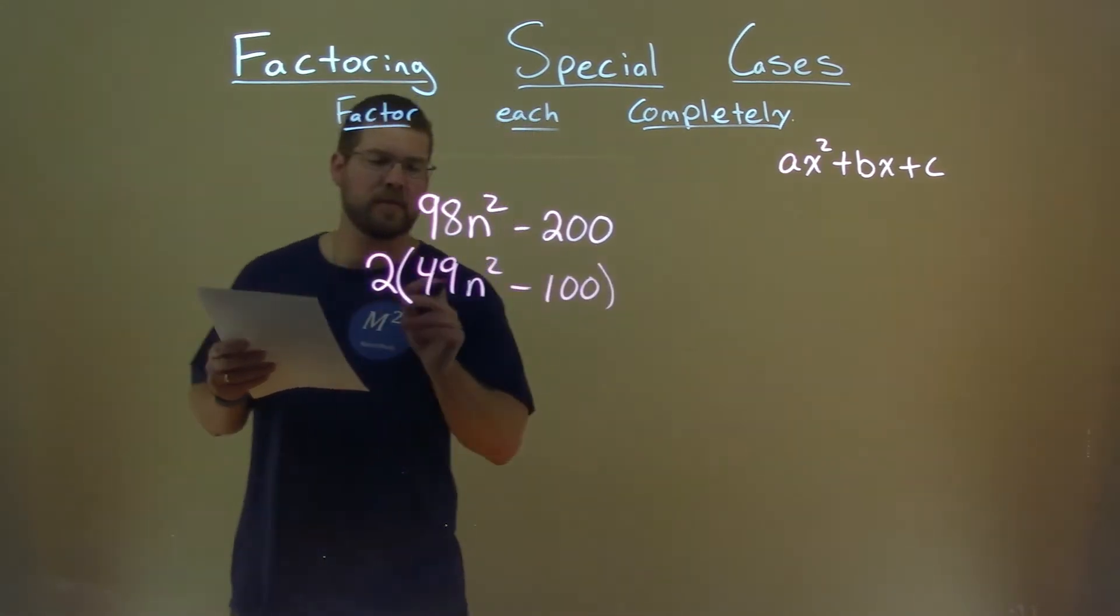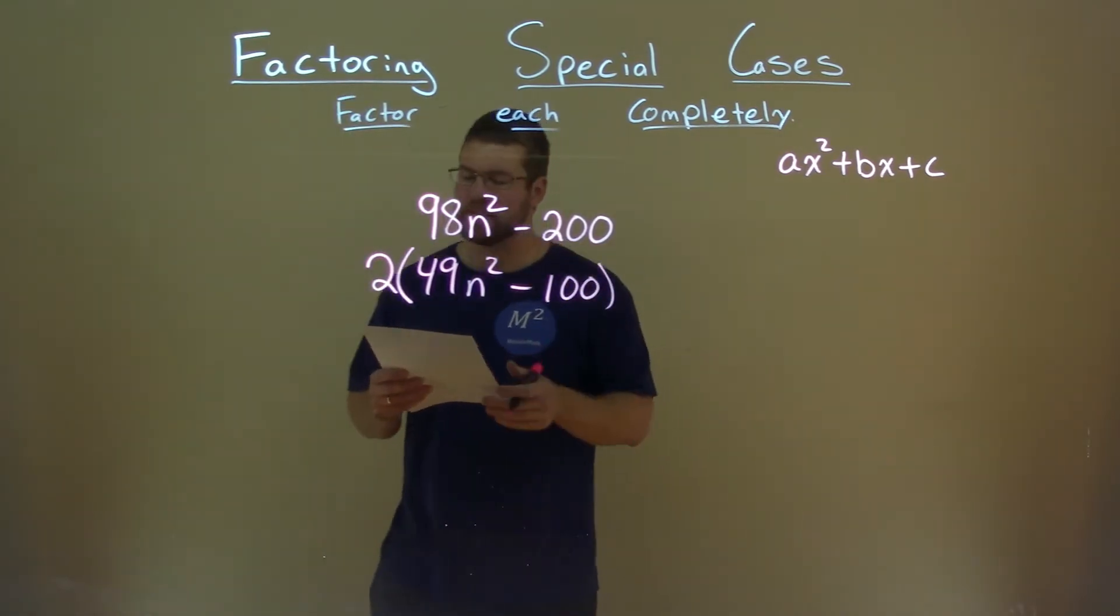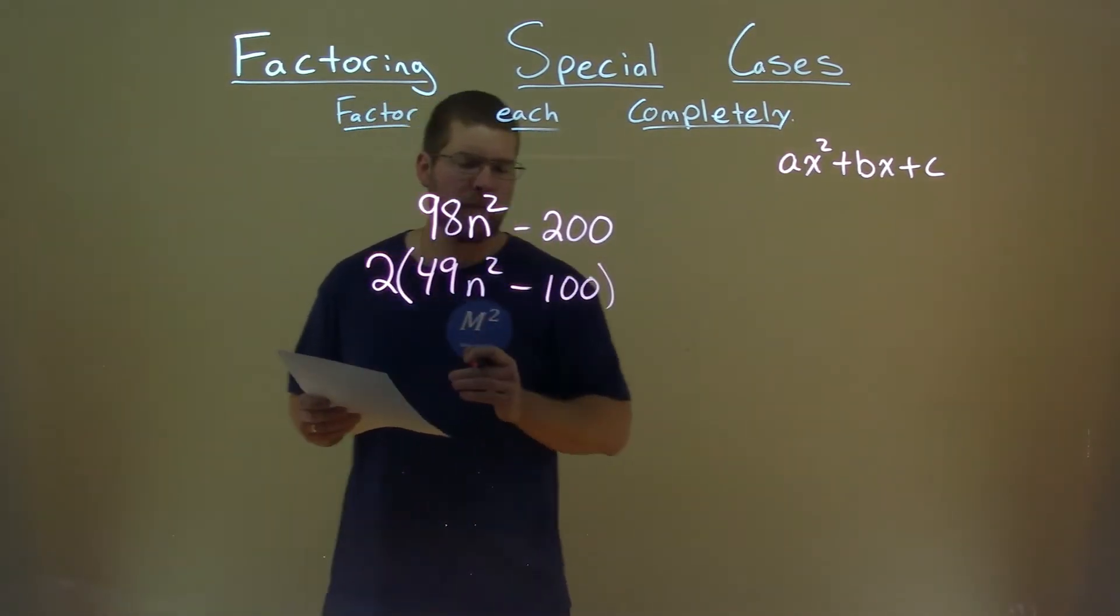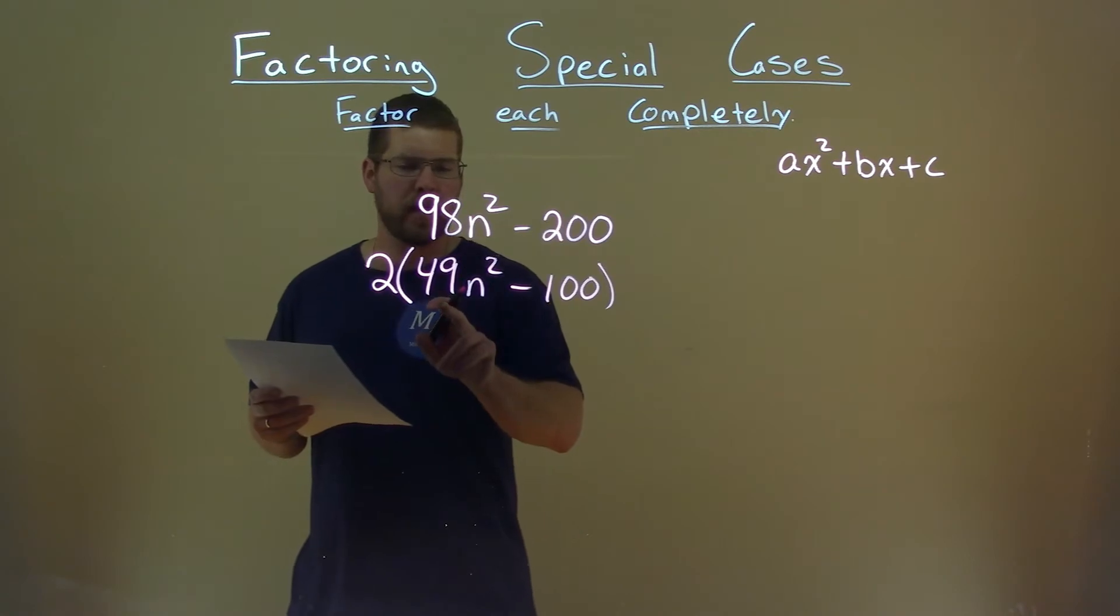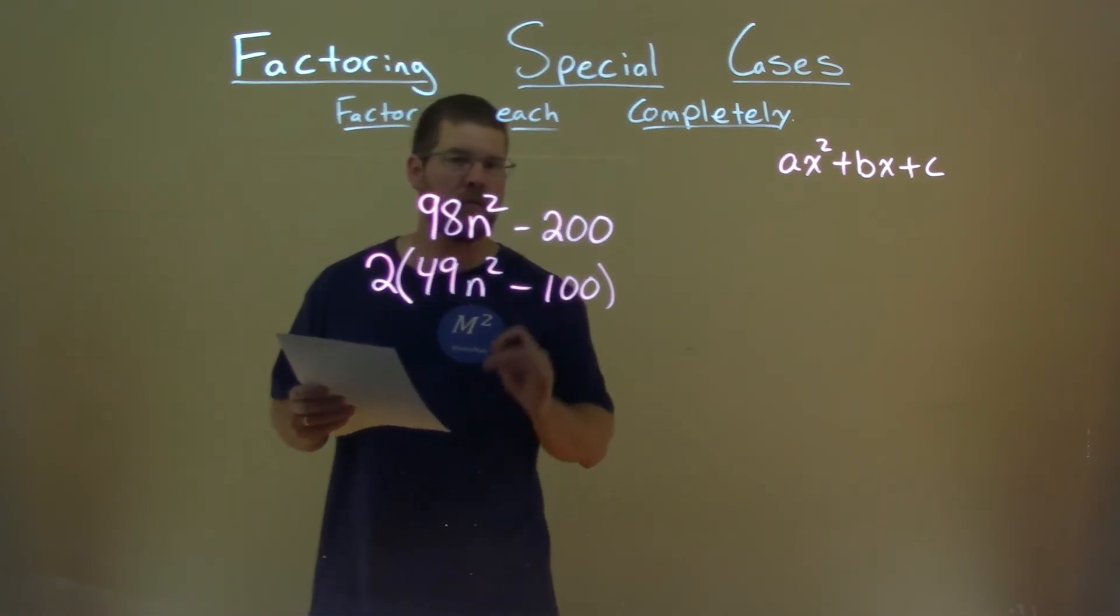So now we have 2 times 49N squared minus 100. But now something else is revealed. 49N squared and 100 are both perfect squares.